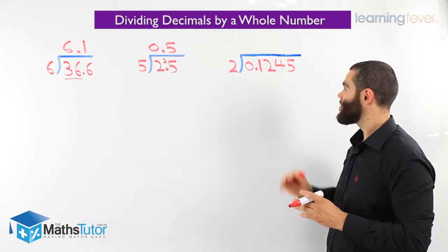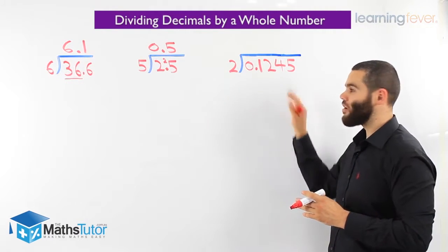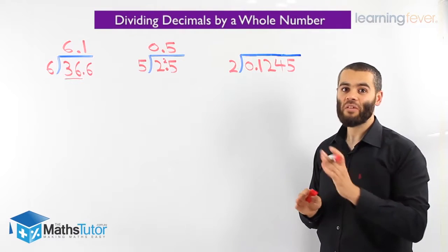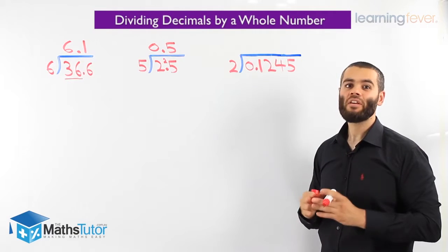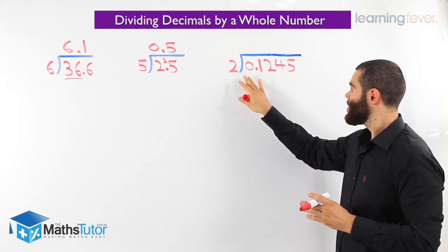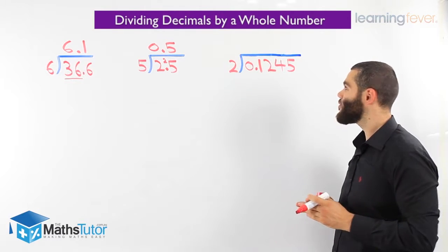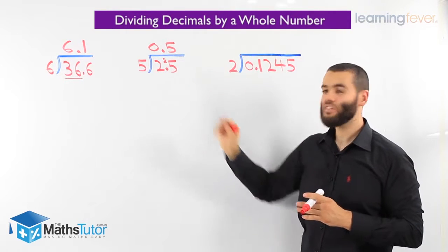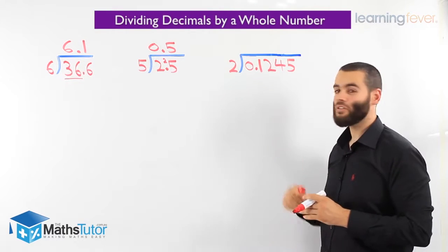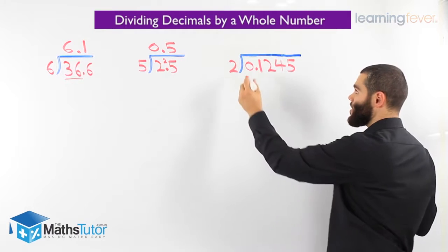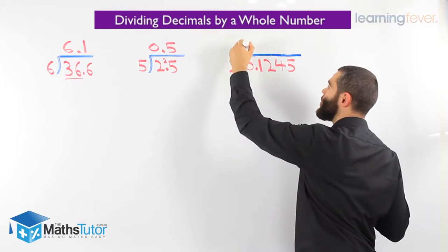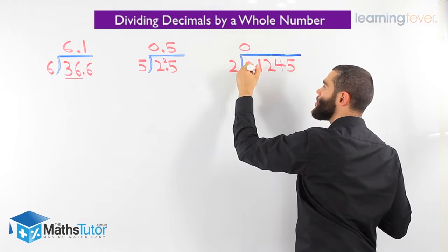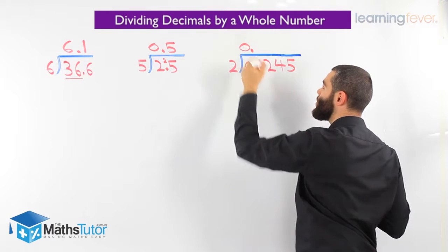Let's look at this example here. It looks long, but if we follow the same process, nothing is going to be hard. 0.12455 divided by 2. We're going to follow the same process we did in the last 2, and you're going to notice how easy it is. How many 2's go into 0? None. You notice we have a point. We always put it in.